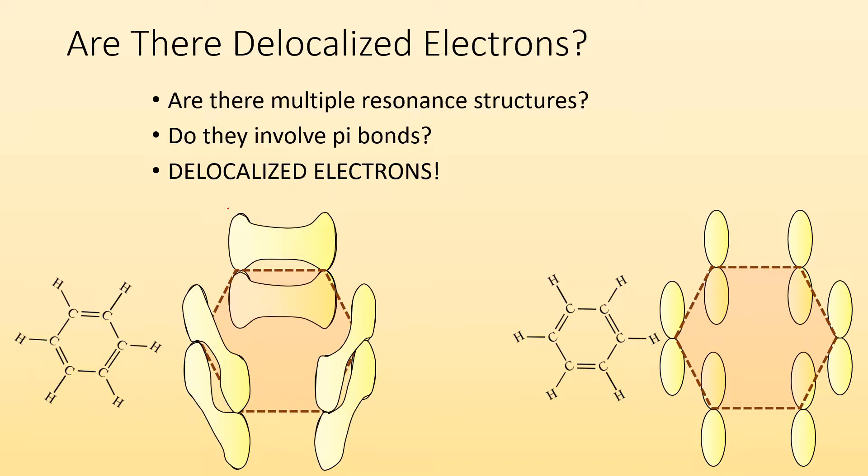With benzene, are there multiple resonant structures? There sure are. Do they involve pi bonds? They sure do. You got delocalized electrons.